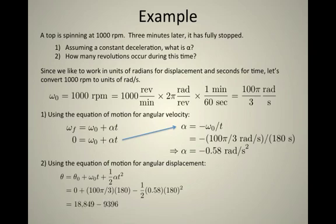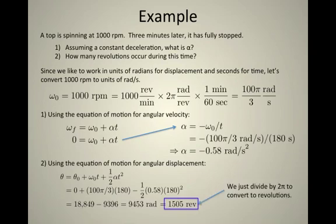we come up with theta is approximately 9,453 radians. And if we remember that 2 pi radians is approximately one revolution, this means that the top has spun through about 1,500 revolutions in the time it took to slow down.